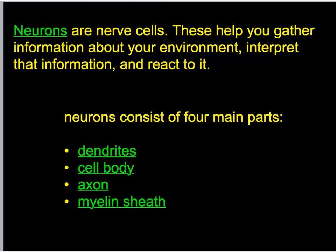The nervous system is a system that allows us to gather information about our environment, then think about or interpret that information, and then react to it. To move around, to talk — as I'm speaking to you I'm using my nervous system to think about what I'm going to say and carry it out, and you're using your nervous system to hear what I'm saying, see the words on screen, interpret that information, and write the materials you're writing.